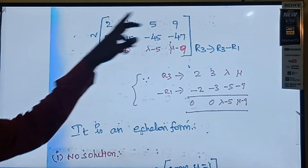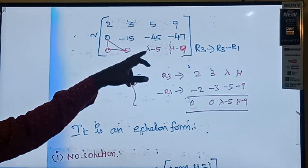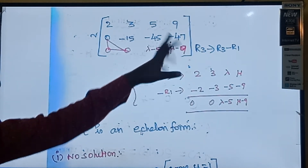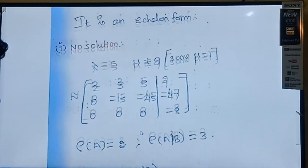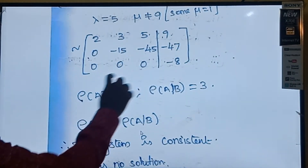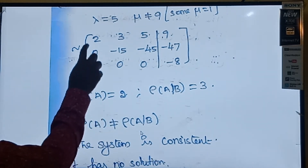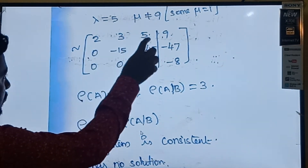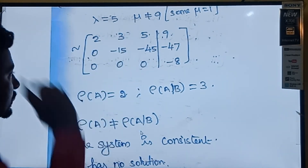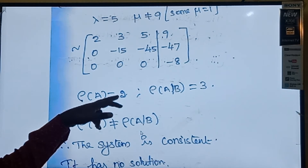Substituting lambda=5 and mu=1: the matrix becomes [2, 3, 5, 9], [0, -15, -45, -47], [0, 0, 0, -8]. With lambda=5: 5-5=0, and mu=1: 1-9=-8. Now the rank of matrix A: row 1 is non-zero, row 2 is non-zero, row 3 is zero — so rank of A = 2.